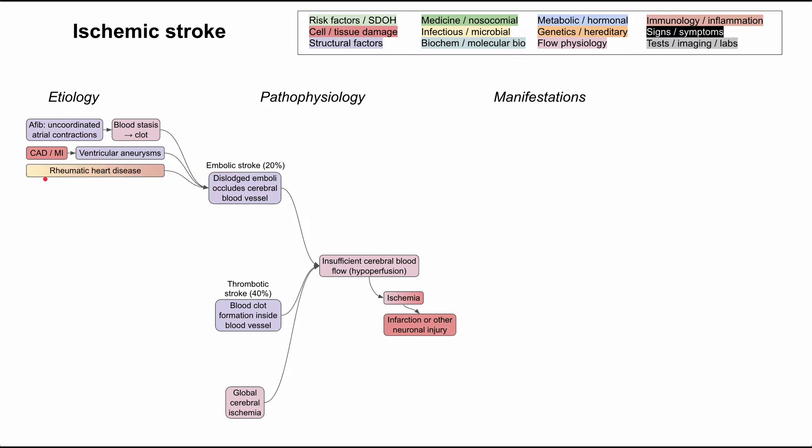Next, rheumatic heart disease, which has an infectious etiology with group A strep that then turns into an inflammatory process through molecular mimicry. That inflammatory process can also cause a clot that creates embolic strokes.